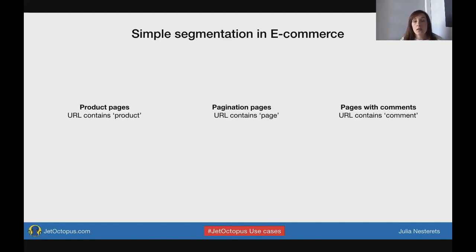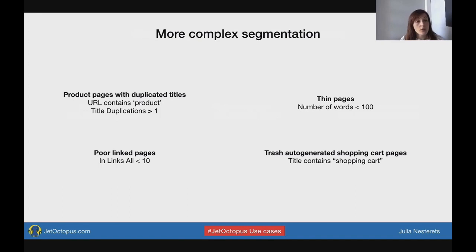Simple segmentation in any e-commerce: there can be product pages — URLs which contain 'product'; pagination pages — URLs which contain 'page'; or pages with comments — URLs which contain 'comments'. There can also be more complex segments like product pages with duplicated titles, where the URL contains 'product' and title duplication is more than one, or thin pages where the number of words is less than 100, poor linked pages where in-links are less than 10, or trash auto-generated shopping cart pages where the title contains 'shopping cart'.